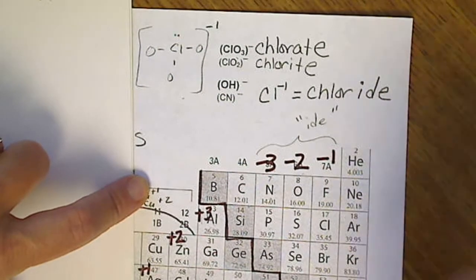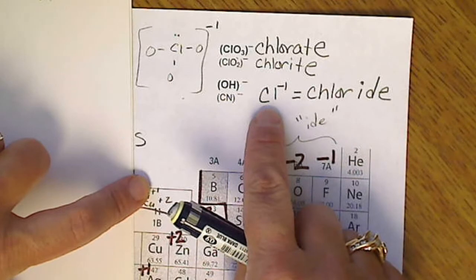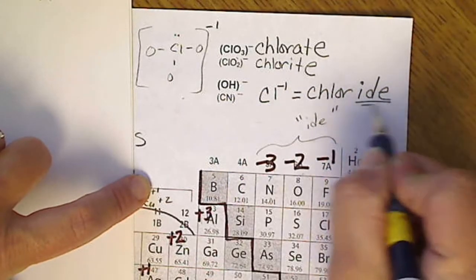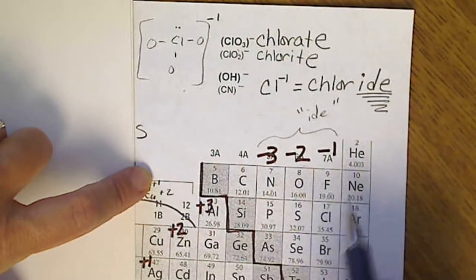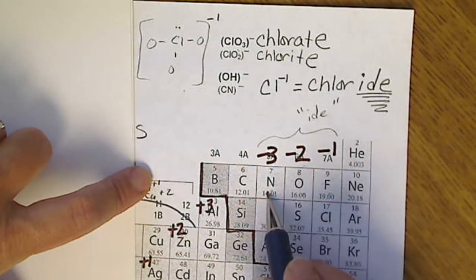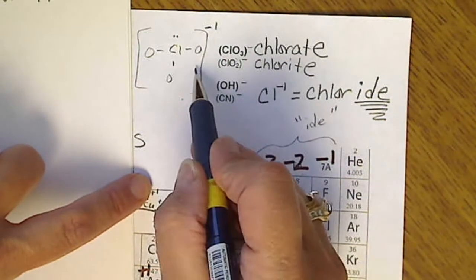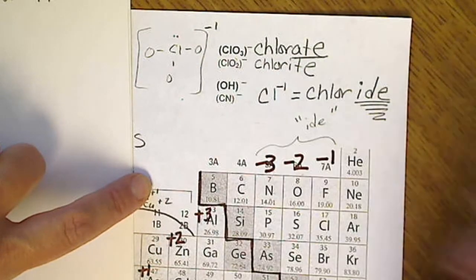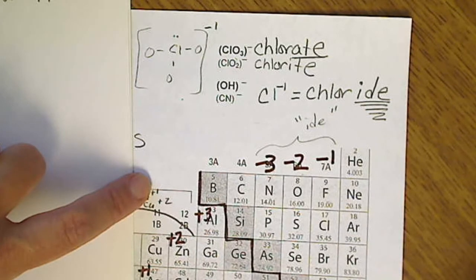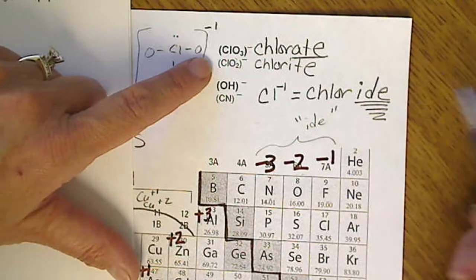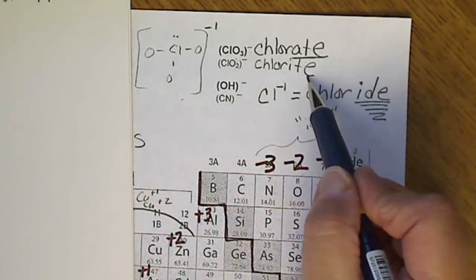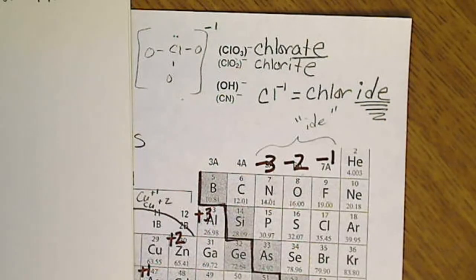So just to remind us, if it's a Cl, it's going to end in chloride, fluoride, sulfide, oxide, nitride. But if we have a group, it's going to end in an ate. So I often refer to the polyatomics as ates. The chlorite ends up having one less oxygen. We don't really need to know that.